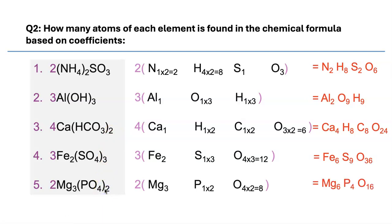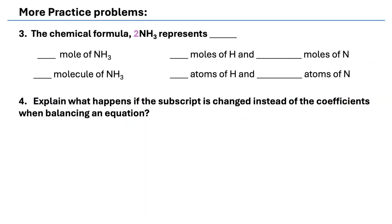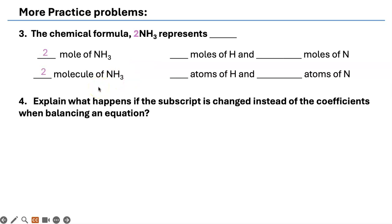I hope you got that right — if not, rewind and try again. Some more practice: 2NH3 represents 2 moles of NH3 and 2 molecules of NH3. How many moles of H and N are represented? That's 3 × 2 = 6 moles of H, and 1 × 2 = 2 moles of N. The same logic applies to the number of atoms.